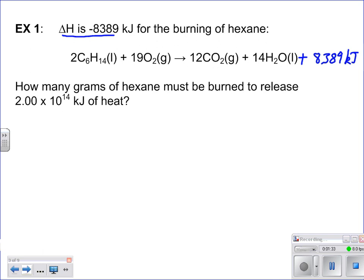So now that we've got that written down, we want to figure out how many grams of hexane must be burned to release this many kilojoules of heat. So we know if I wanted I could even write down the kilojoules that we know right here, 2 times 10 to the 14th kilojoules. That's what we know we're trying to figure out grams. So we always start with what we're given, what we know. 2.00 times 10 to the 14th kilojoules.